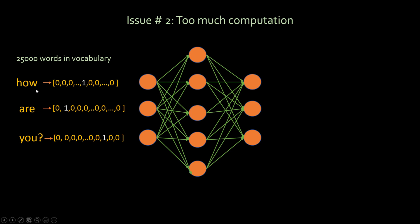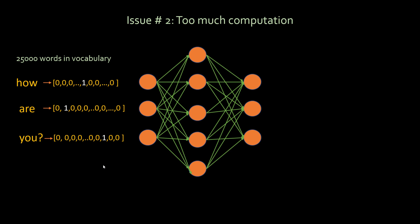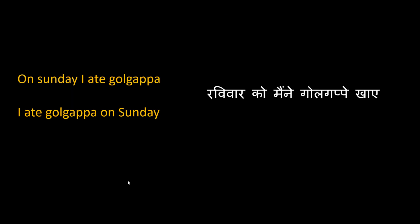That might work but it's not ideal. The second issue is too much computation. Neural networks work on numbers, not strings, so you have to convert your words into vectors. One way is one-hot encoding: if there are 25,000 words in your vocabulary, each word maps to a position — for example, 'how' at position 46, 'are' at position 2, 'you' at position 17,000 — and you put a 1 at that position and 0 elsewhere. This increases computation enormously.